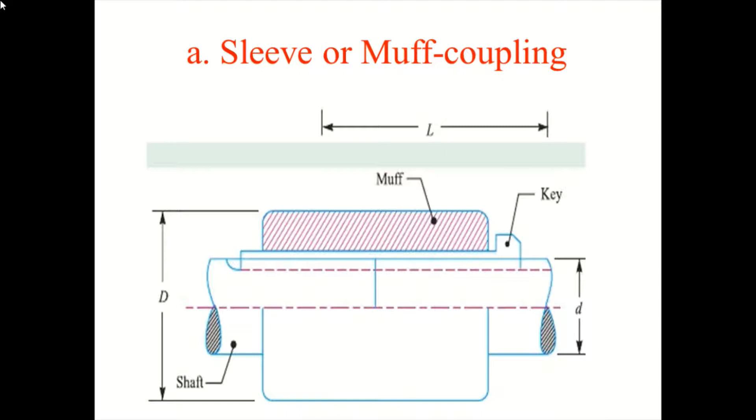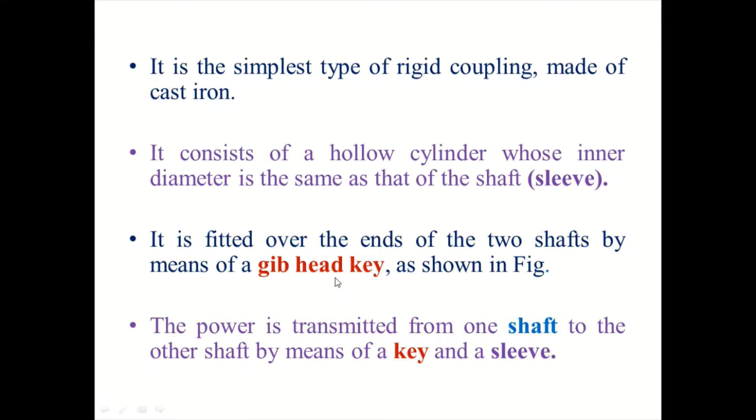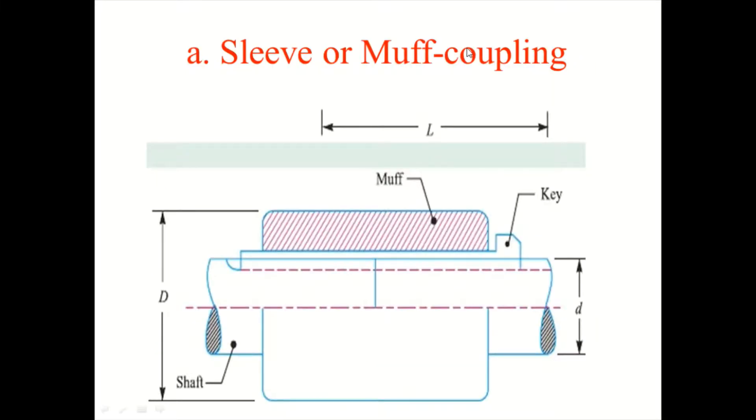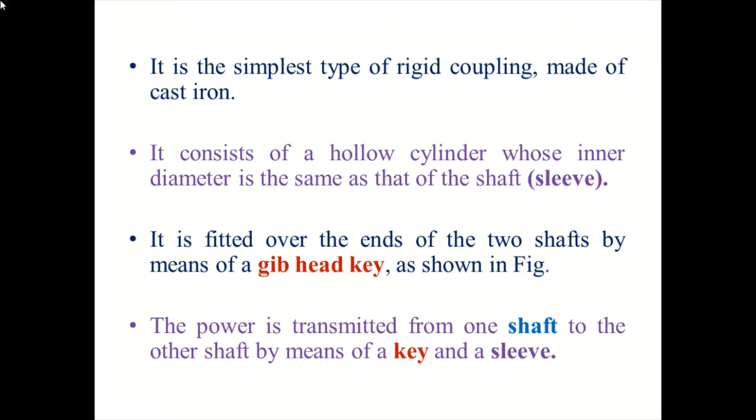Now I am going to explain sleeve or muff coupling. This is the shaft with two parts. The muff will be covered over the shaft. Both shaft diameters will be connected with the key, and the diameter is called the muff diameter or sleeve diameter. It is a simple type of rigid coupling made of cast iron. It consists of a hollow cylinder whose inner diameter is the same as that of the shaft. It is fitted over the end of the two shafts by means of a gib head key as shown in the figure. The power is transmitted from one shaft to another shaft by means of a key and sleeve.